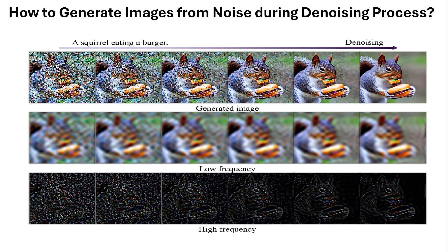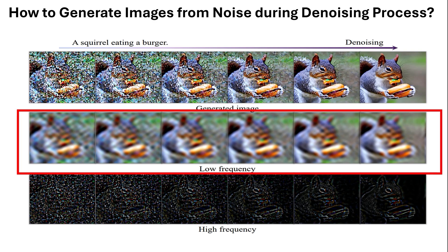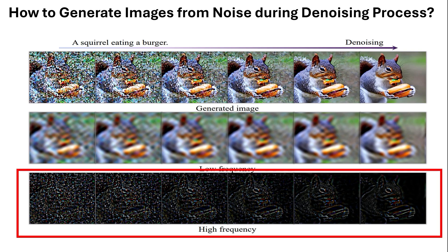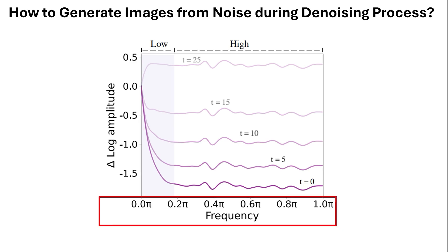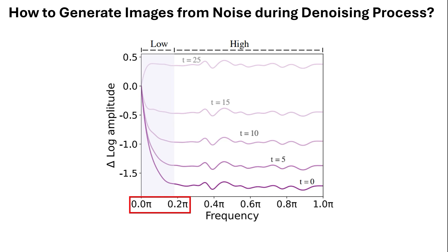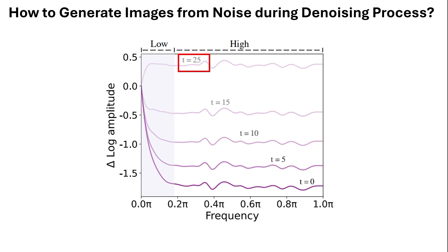The paper first tries to investigate what happens in terms of changes when we generate images from noise during the denoising process. As we denoise and reach the latest denoising steps, the low frequency information of the image doesn't change much, while we can clearly see a significant change in high frequency details. In this figure, the y-axis shows the difference of log amplitude, where positive values show amplification in noise and negative values show attenuation. The x-axis shows different frequency values from 0 to 2π for low frequency details like global structure and layout, and 2π to π for high frequency details like edges.